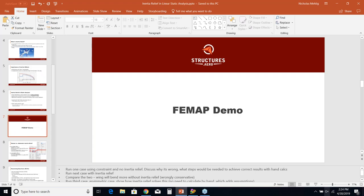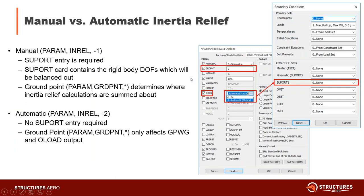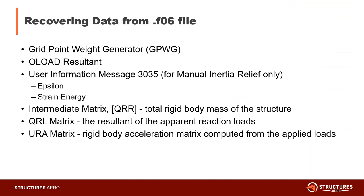Let's talk about the F06 output data from inertia relief runs. When you run inertia relief you get additional output including: a grid point weight generator, an OLOAD resultant, and if running manual inertia relief you also get a user information message and intermediate matrices QRR, QRL, and URA. The grid point weight generator is summed about your ground point — by default about the origin — and gives you the total rigid body mass matrix of your model as a six-by-six matrix.